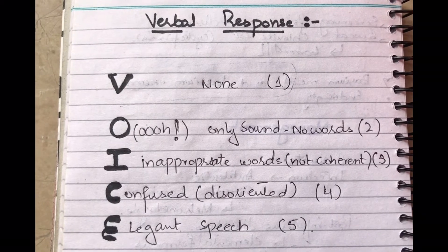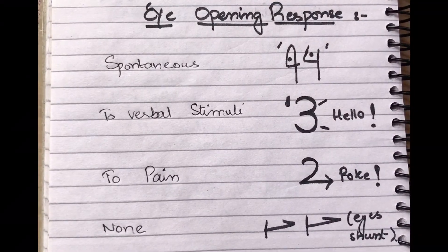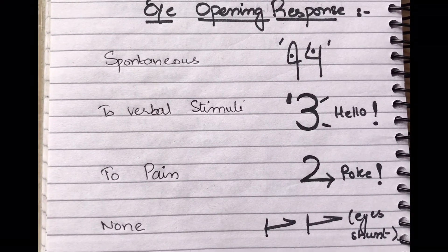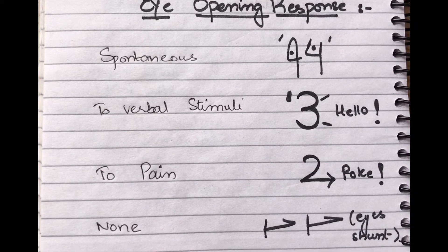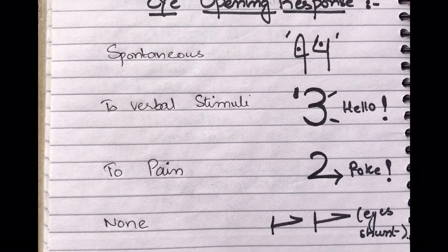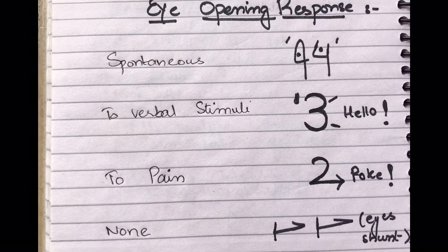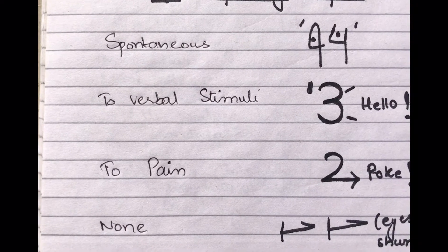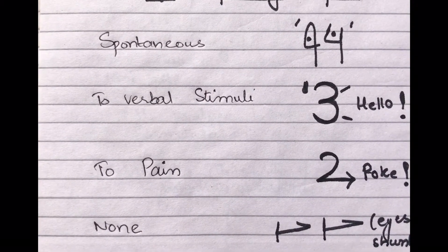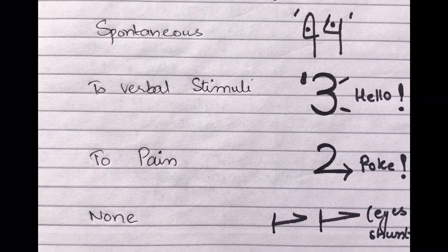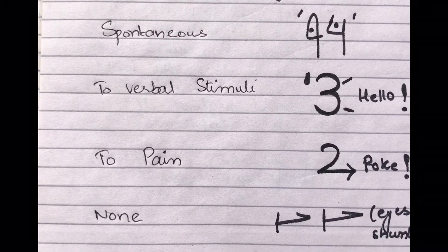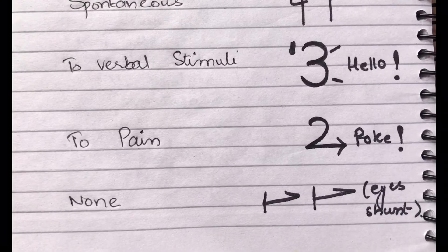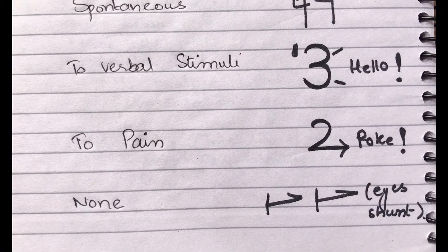Moving on to the eye-opening response. A score of 4 means both eyes are open spontaneously. If there is a verbal stimulus — like saying hello to the patient and he opens his eyes — that is a score of 3. If he responds to pain, that is a score of 2. If there is no response and the eyes remain closed, that is a score of 1.